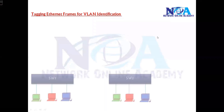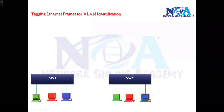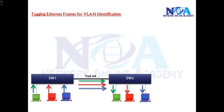We have already seen that a single VLAN can span over multiple switches. If you want VLAN users of the same VLAN to talk to each other, we need to connect a trunk link, which will carry VLAN 10, VLAN 20, or VLAN 30 traffic.